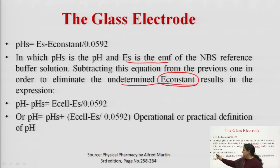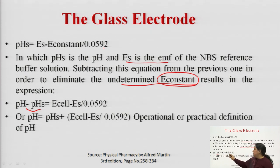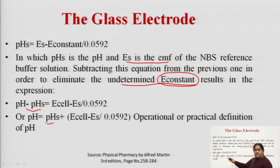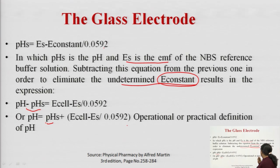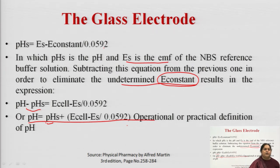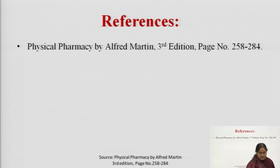Subtracting the two equations to eliminate E_constant gives: pH − pH_S = (E_cell − E_S) / 0.0592, or pH = pH_S + (E_cell − E_S) / 0.0592. This is the operational or practical definition of pH used to calculate pH when using a glass electrode as the indicator electrode.